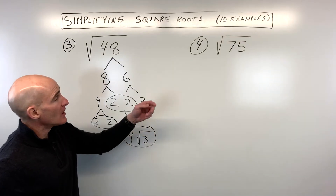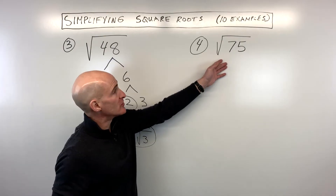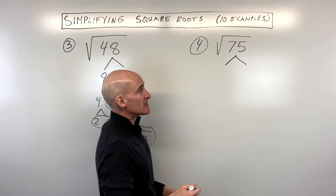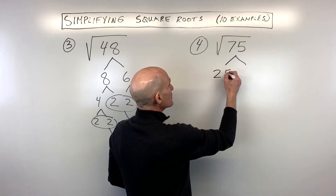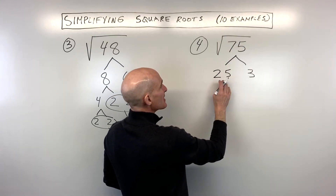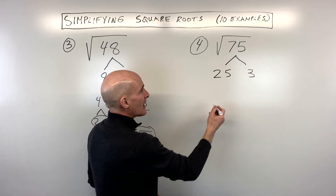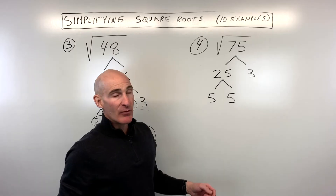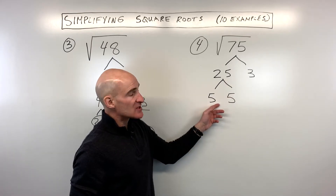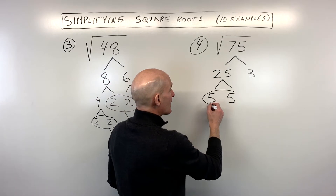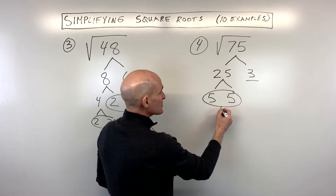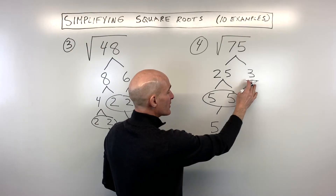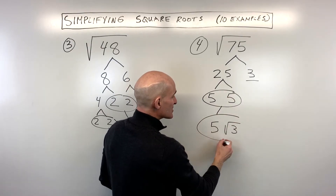For example 4, see if you can do this one on your own: the square root of 75. Let's break this down into its prime factors. We know 25 times 3 is 75, and 25 is 5 times 5. We're down to prime numbers now. Are there any pairs? We've got a pair of 5s and a 3 left over, so the answer is 5√3. The number that doesn't have a pair is like the remainder — it stays underneath the square root.